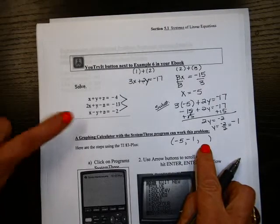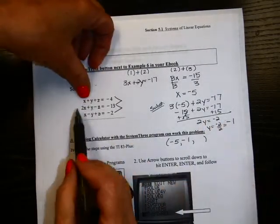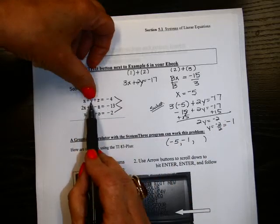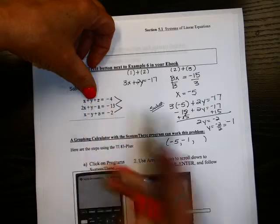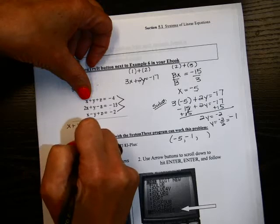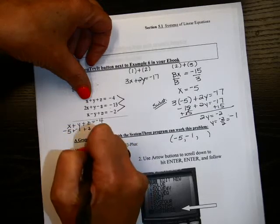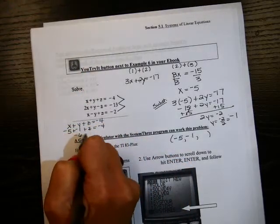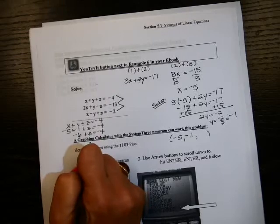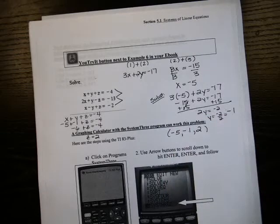All I need is z. So I'm just going to go back to my original ones up here. I think the first one would be my easy one to substitute in. So x is negative 5. Y is negative 1. Negative 5 and negative 1 is negative 6. I'll go ahead and write it. Let me make a little room here. So we're going to use x plus y plus z is negative 4. Negative 5, negative 1, z, and negative 4. So I have negative 6 plus z is negative 4. You're going to add 6 to both sides. And you're going to get z then is 2. Negative 5, negative 1, 2.